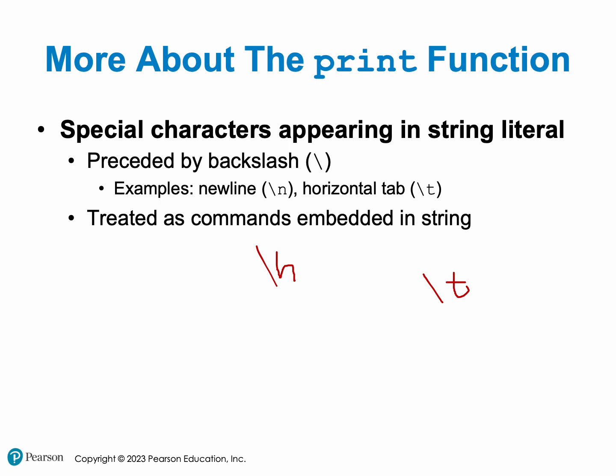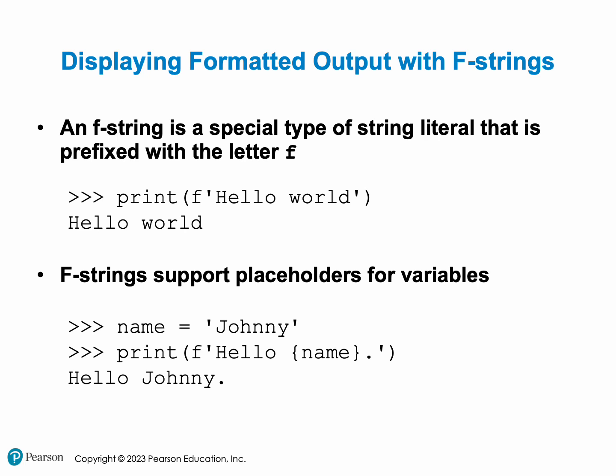Now let's talk about printing formatted output. Formatted output is available in Python — all you need to do is put 'f' in front of the string inside your parentheses. In this case nothing changes because we're not embedding anything — we're just printing 'hello world'. However, in the next example we have a variable called 'name' assigned to 'johnny'. We want to print 'hello johnny', so we pass the variable into our formatted string by placing 'f', opening the quotation marks, then using curly braces with the variable inside — this will produce 'hello johnny'.